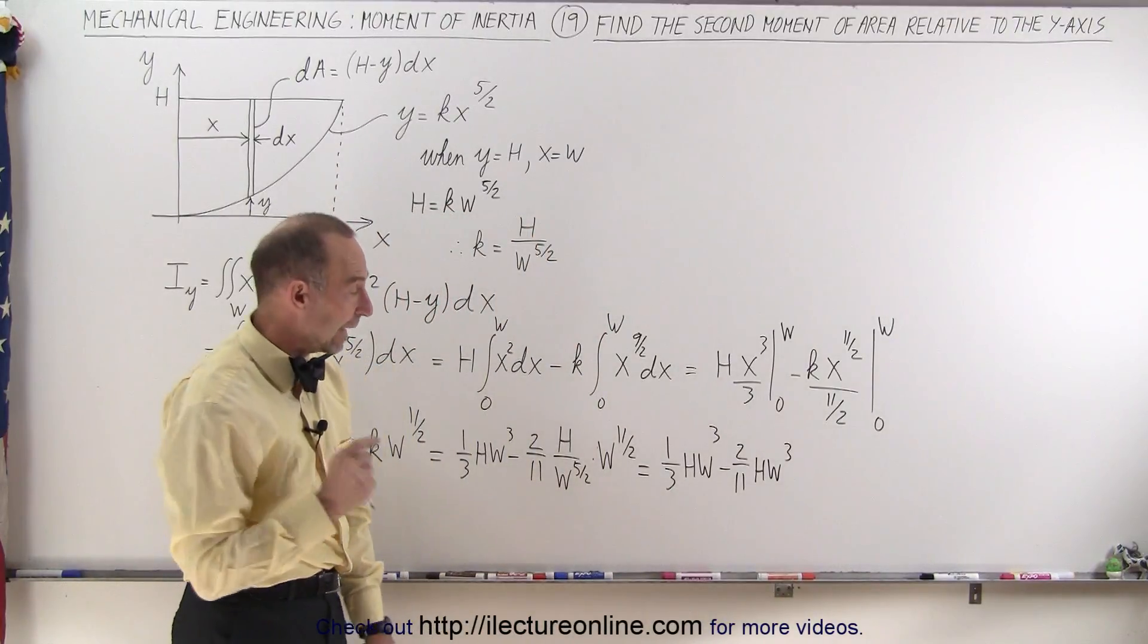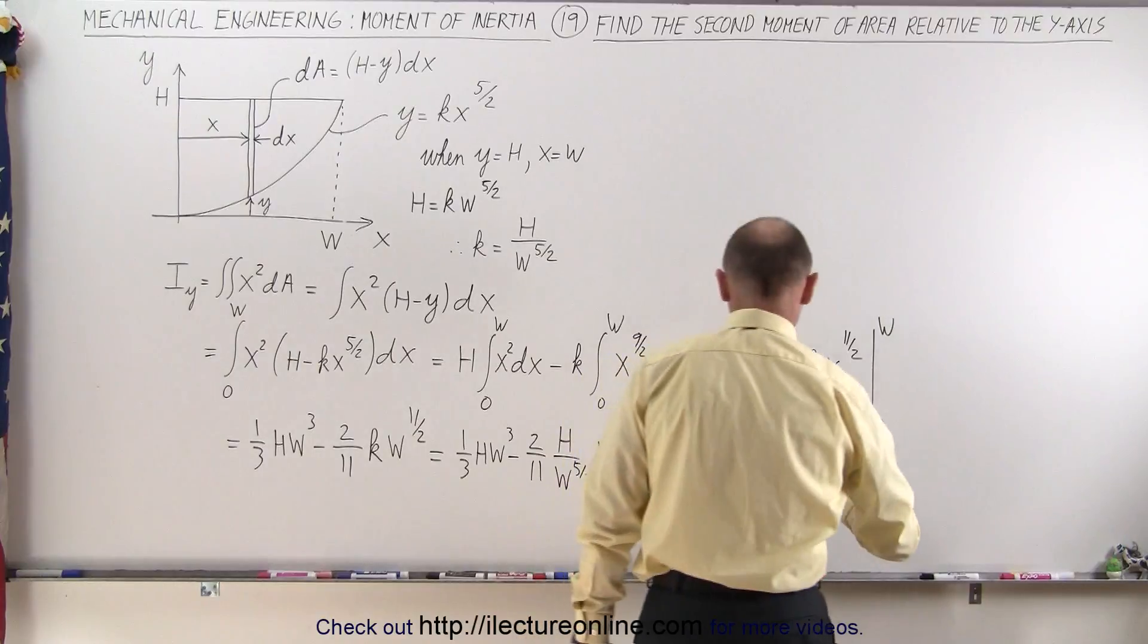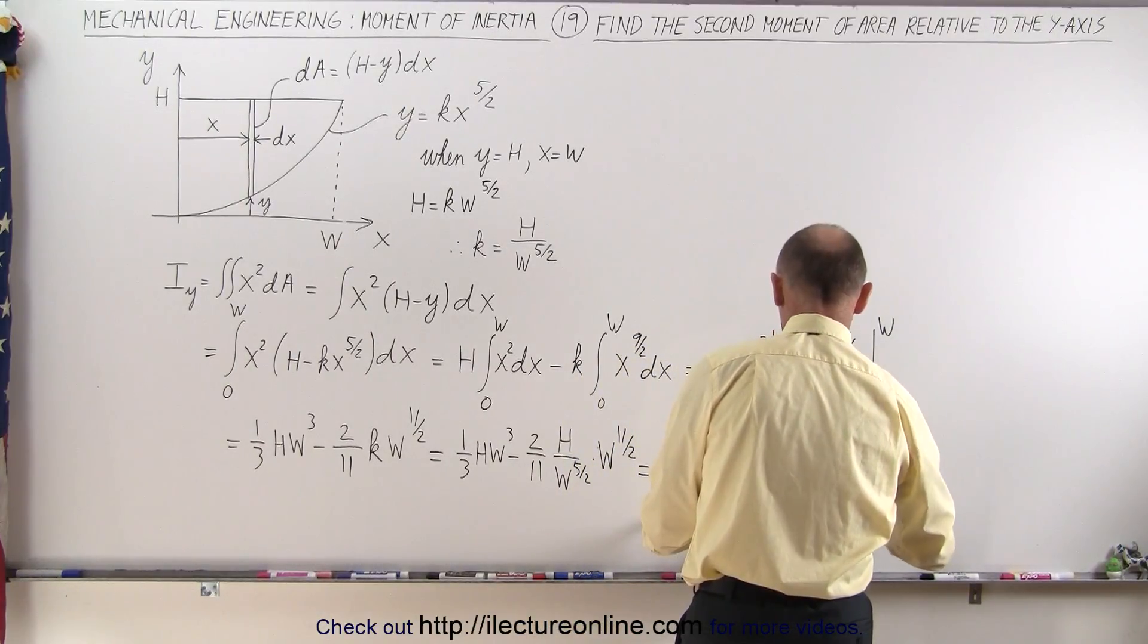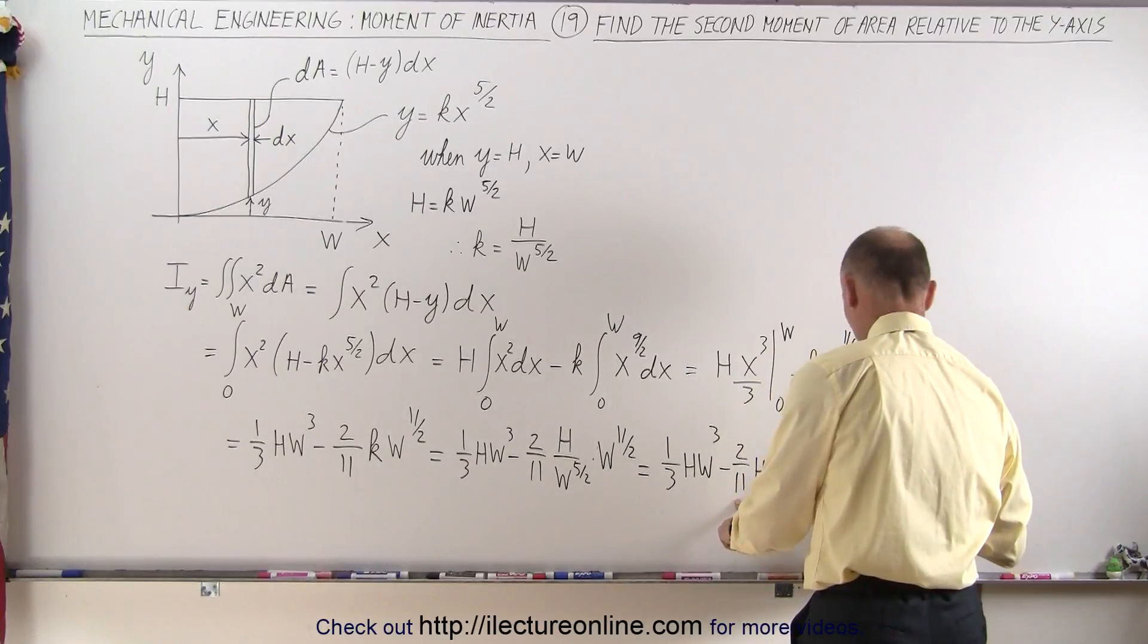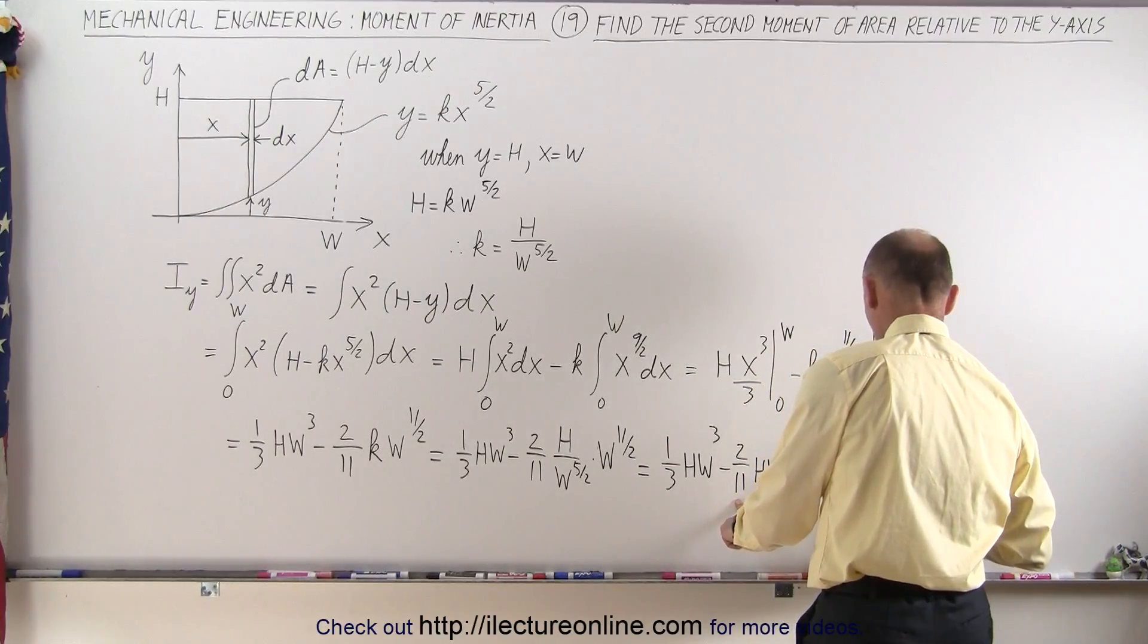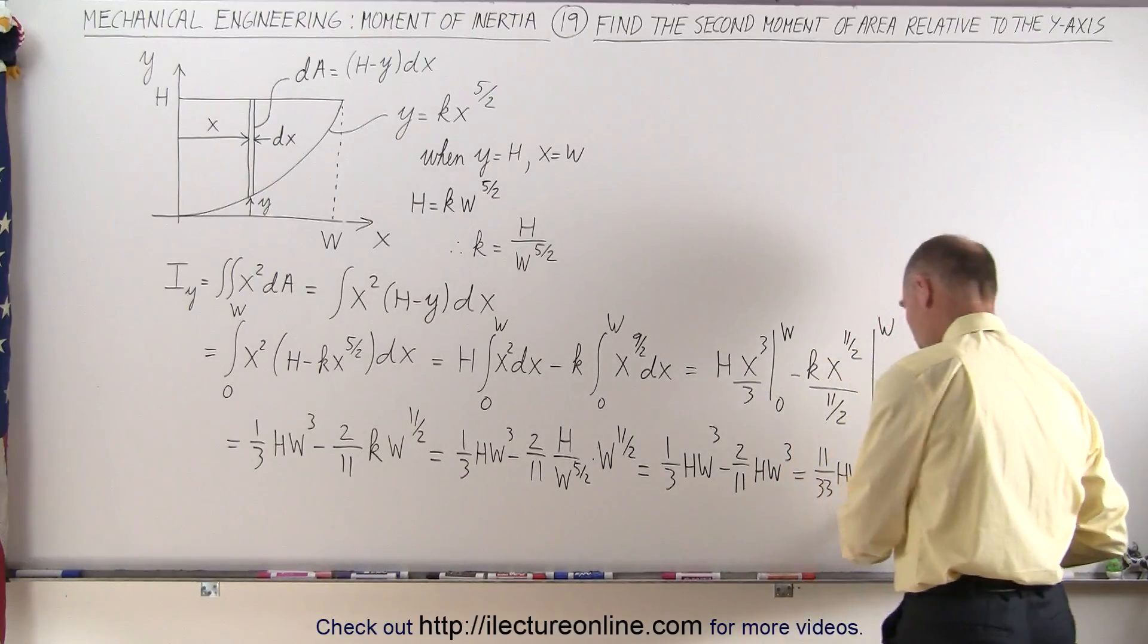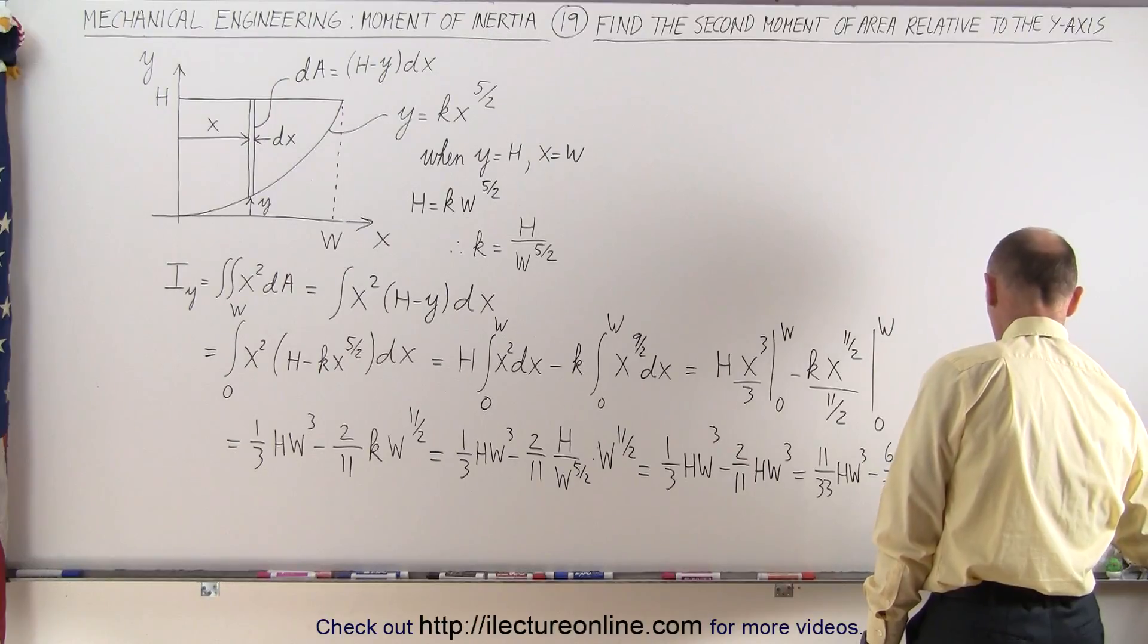Now you can see that we have an hw cubed in each term, we can now subtract the two from each other, so this is equal to, the common denominator is 33, so it would be 11 over 33 hw cubed minus 6 over 33 hw cubed, and that becomes equal to 5 over 33 hw cubed.